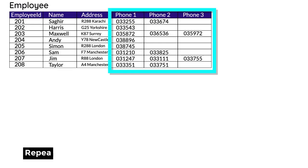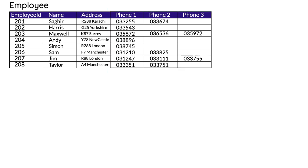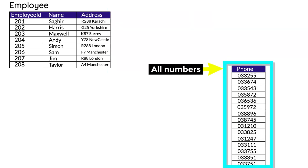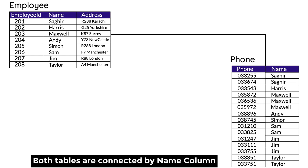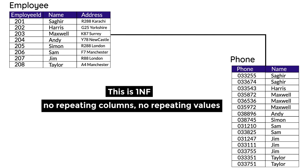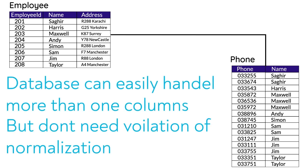A table cannot be in First Normal Form if it contains repeating values or repeating columns — columns that contain almost the same type of information but in different columns. The solution is to take out the part creating the problem, which is the phone numbers, and create a separate table for phone numbers, connecting them with the relevant value (name in this case), then join both tables. Now it's in First Normal Form. The tables have increased from one to two, but there are no repeating values or repeating columns.